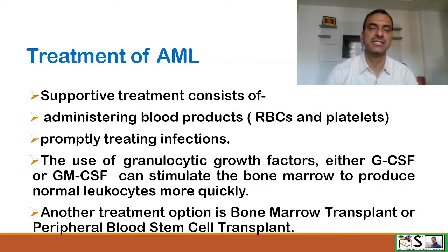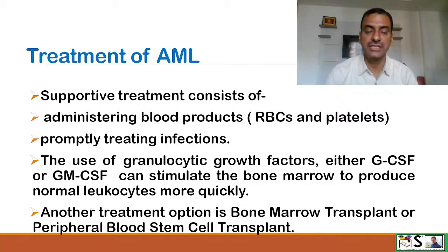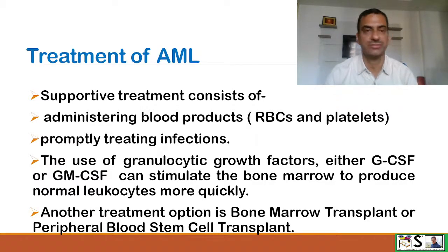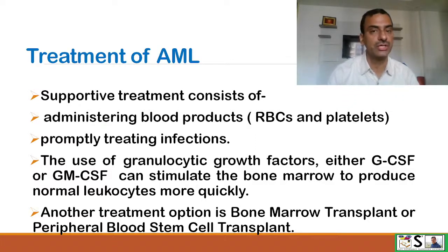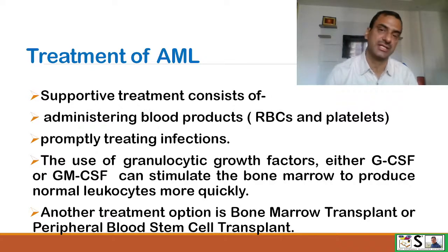Along with chemotherapy, supportive treatment is also provided, which includes administration of blood products as needed — such as RBCs and platelets — promptly treating infections, and the use of granulocyte growth factors such as G-CSF or GM-CSF, because these stimulate the bone marrow to produce normal leukocytes more quickly. Another treatment option is bone marrow transplant or peripheral blood stem cell transplant.